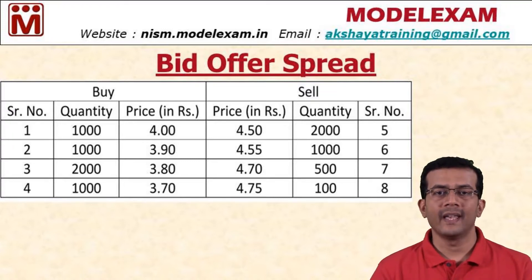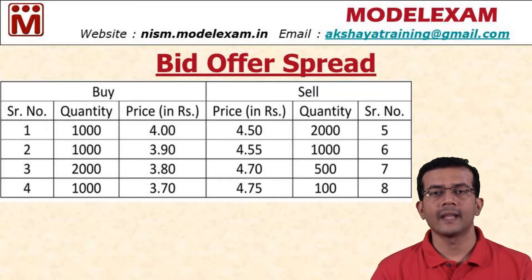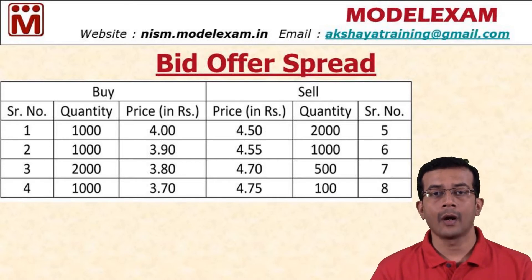If the bid-offer spread is small — for example, if the best bid is 4 and the best offer is 4.1, then the spread is only 0.1 — it means that particular stock has high liquidity. If the bid-offer spread is huge — for example, the best bid is 4 and the best offer is 5, giving a spread of 1 rupee — it means liquidity is very very low.